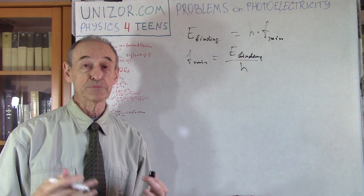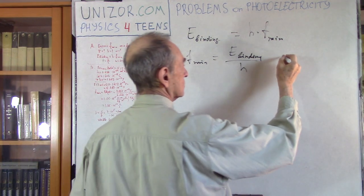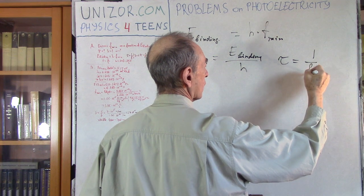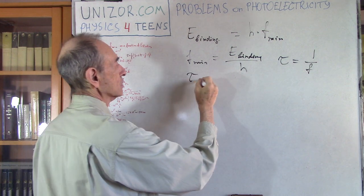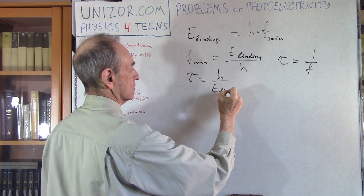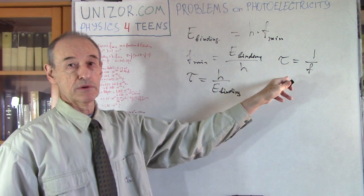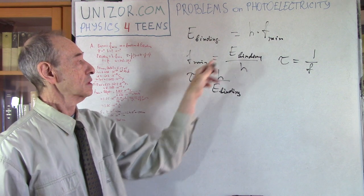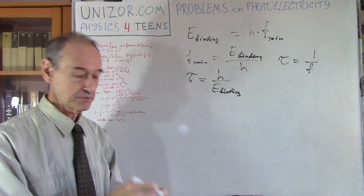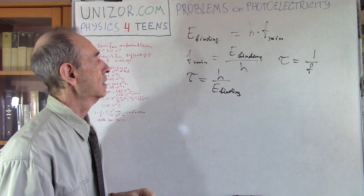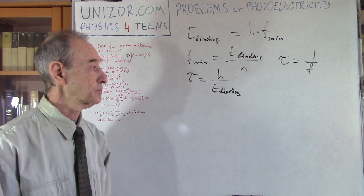Other characteristics of that particular light - the period tau. Period is 1 over F, so the period is equal to H over E binding. The greater the frequency, the smaller the period. If frequency is minimum, the period is actually maximum. This is the maximum period of the wave falling on the surface needed to kick off electrons if energy of binding is given.